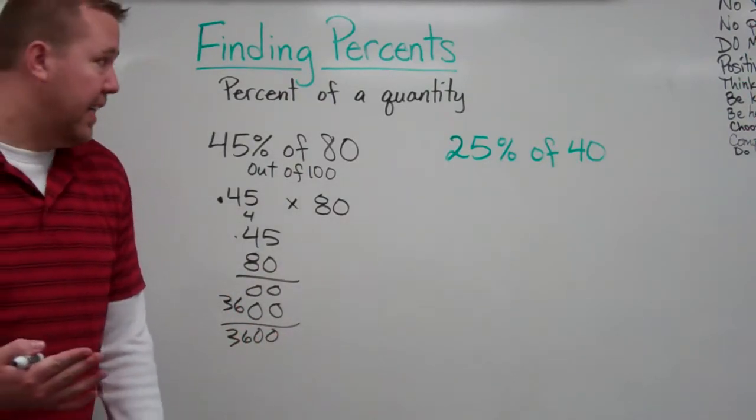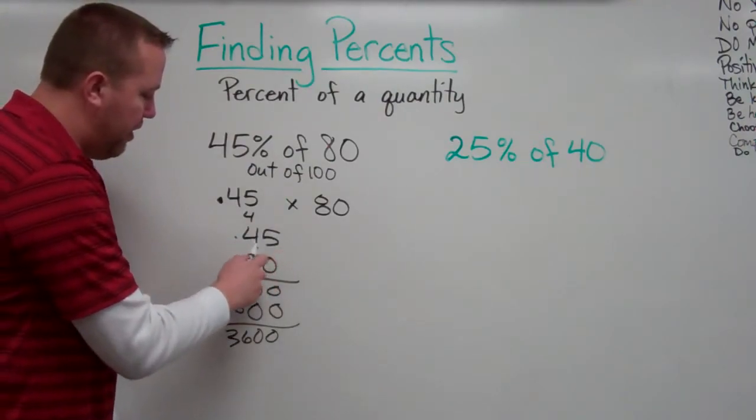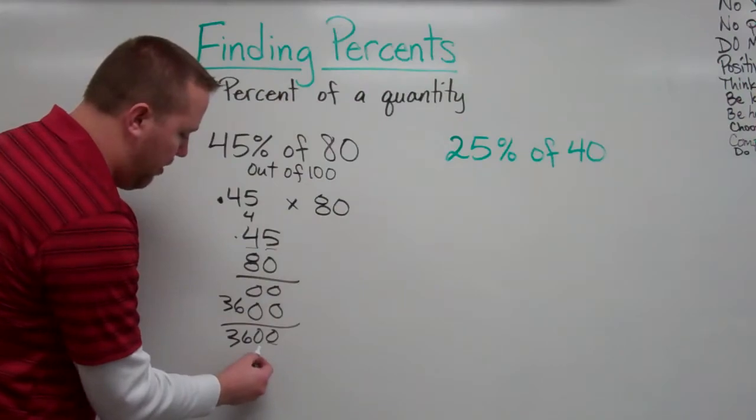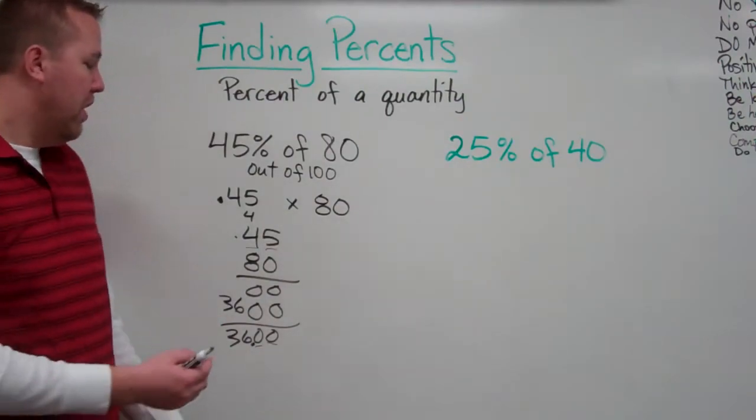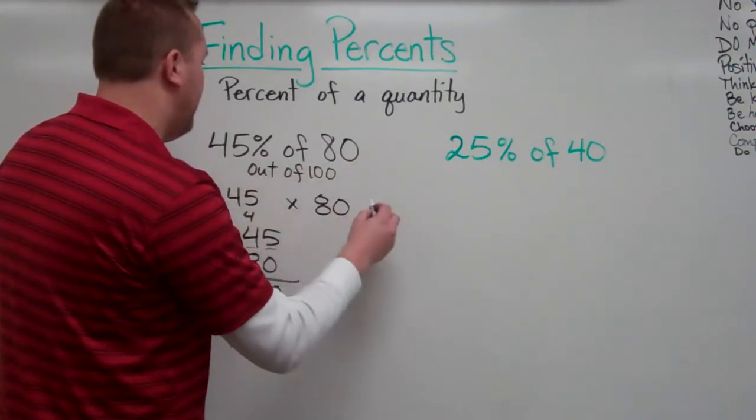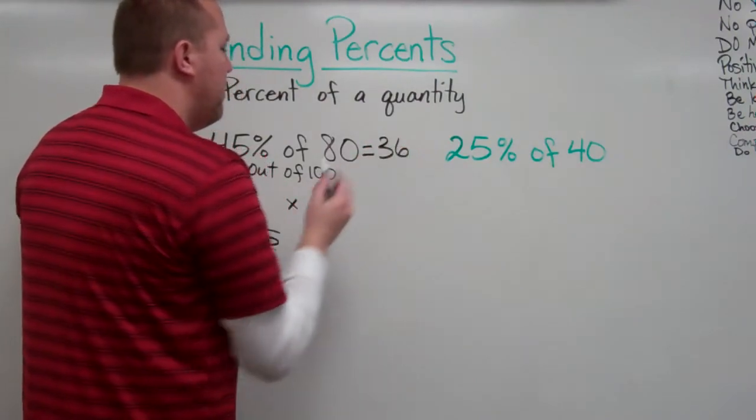Now, when we are multiplying decimals, we need to remember, however many digits are after the decimal in the problem, same amount in the answer. So, two digits after the decimal in the problem, two digits after the decimal in the answer. So, we get 36.00 or just 36.